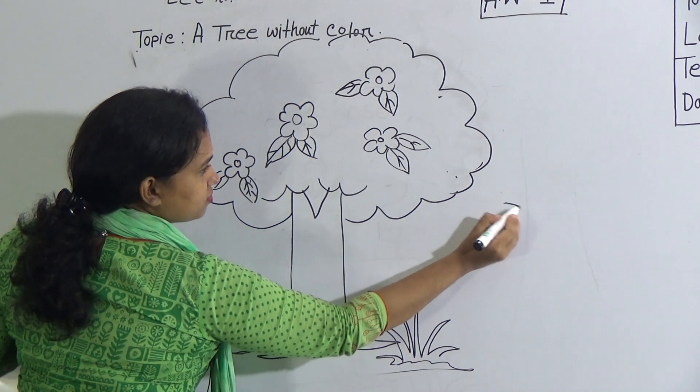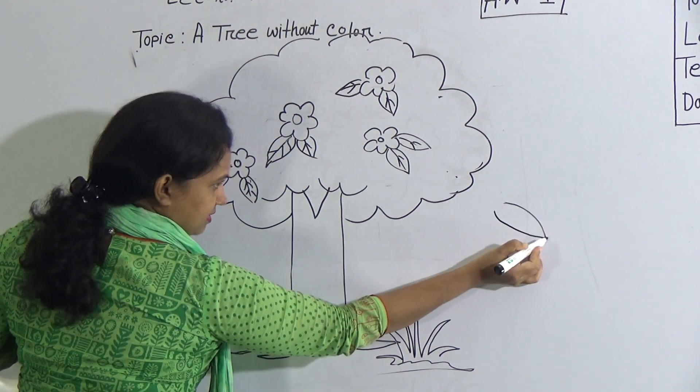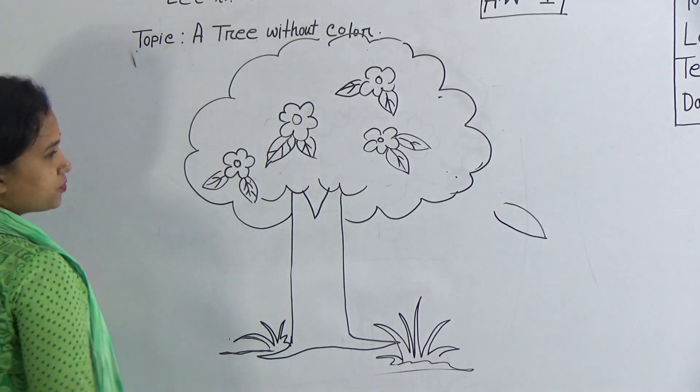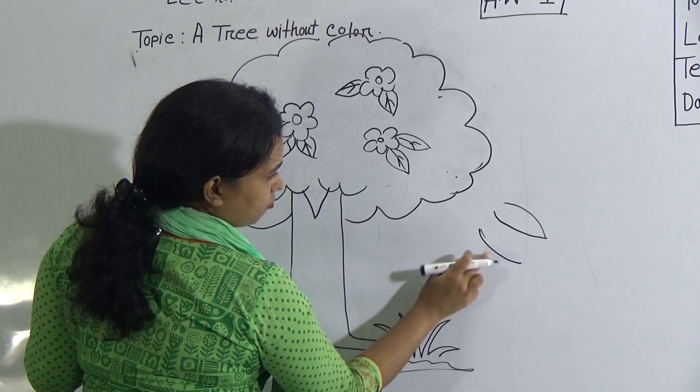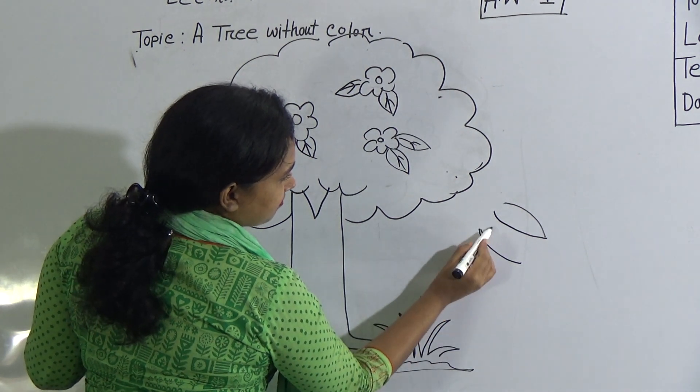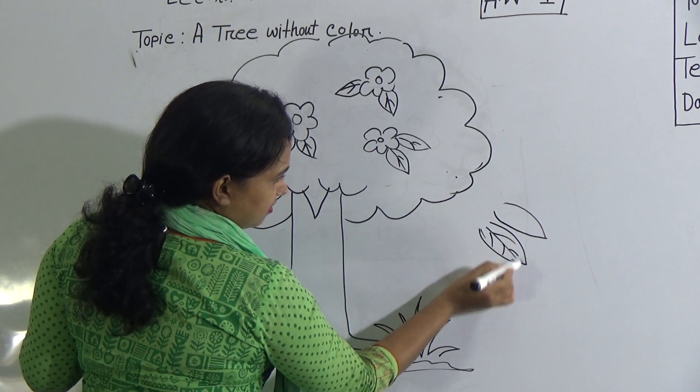Again, I will show you. Just give this type of line. Again, here this type of line. That means, two more. First, this type of curve line. One more. And then, another reverse. And make the leaf.